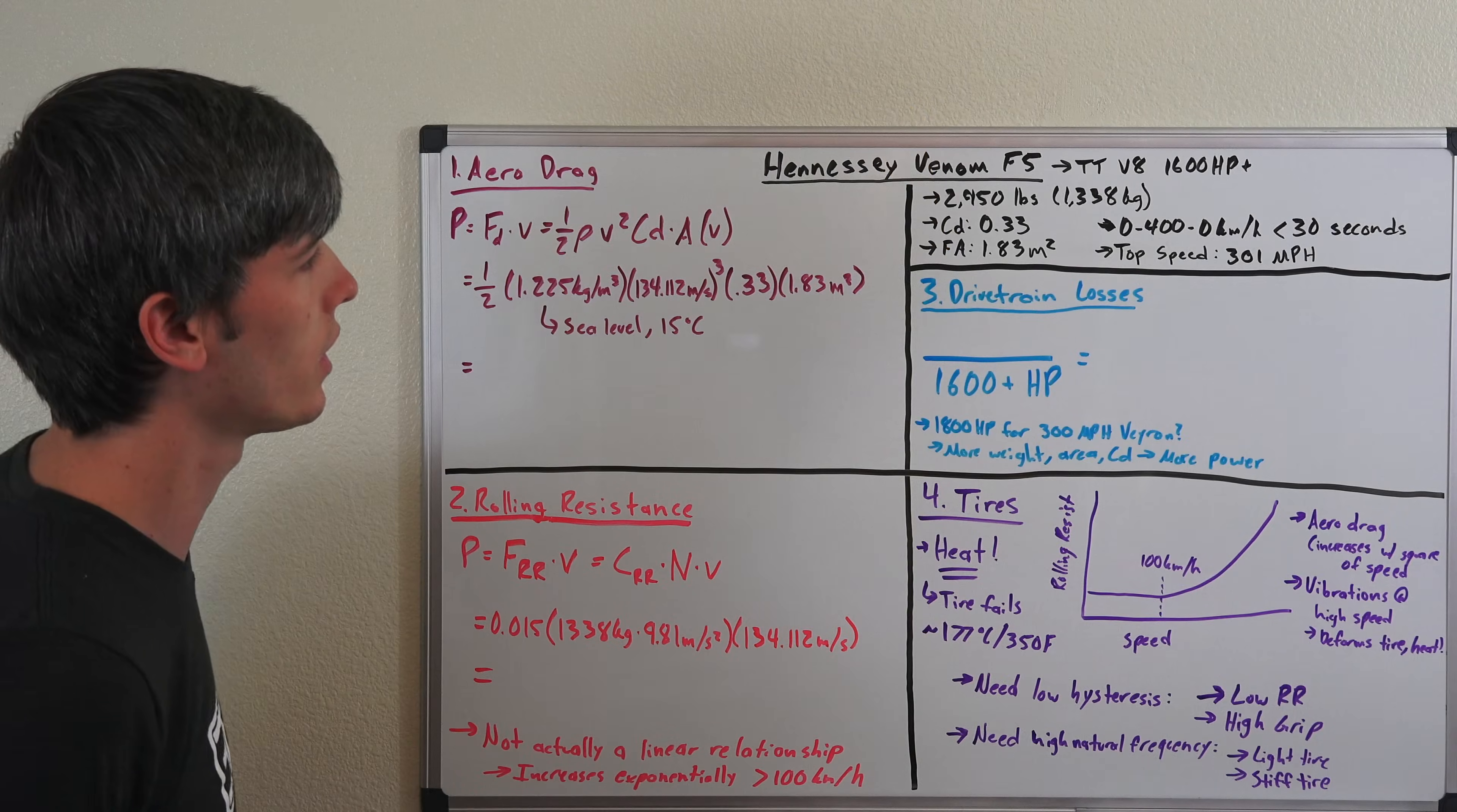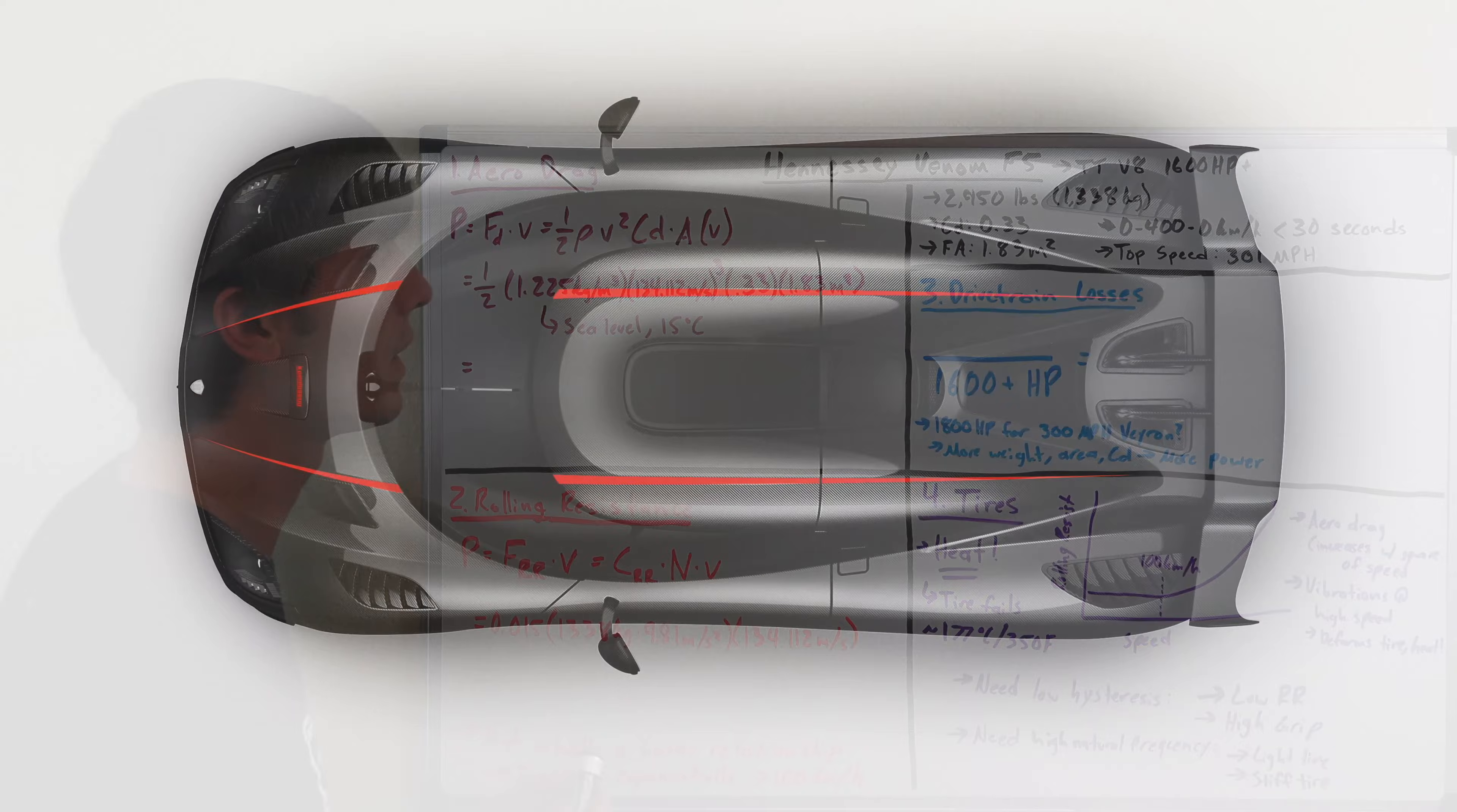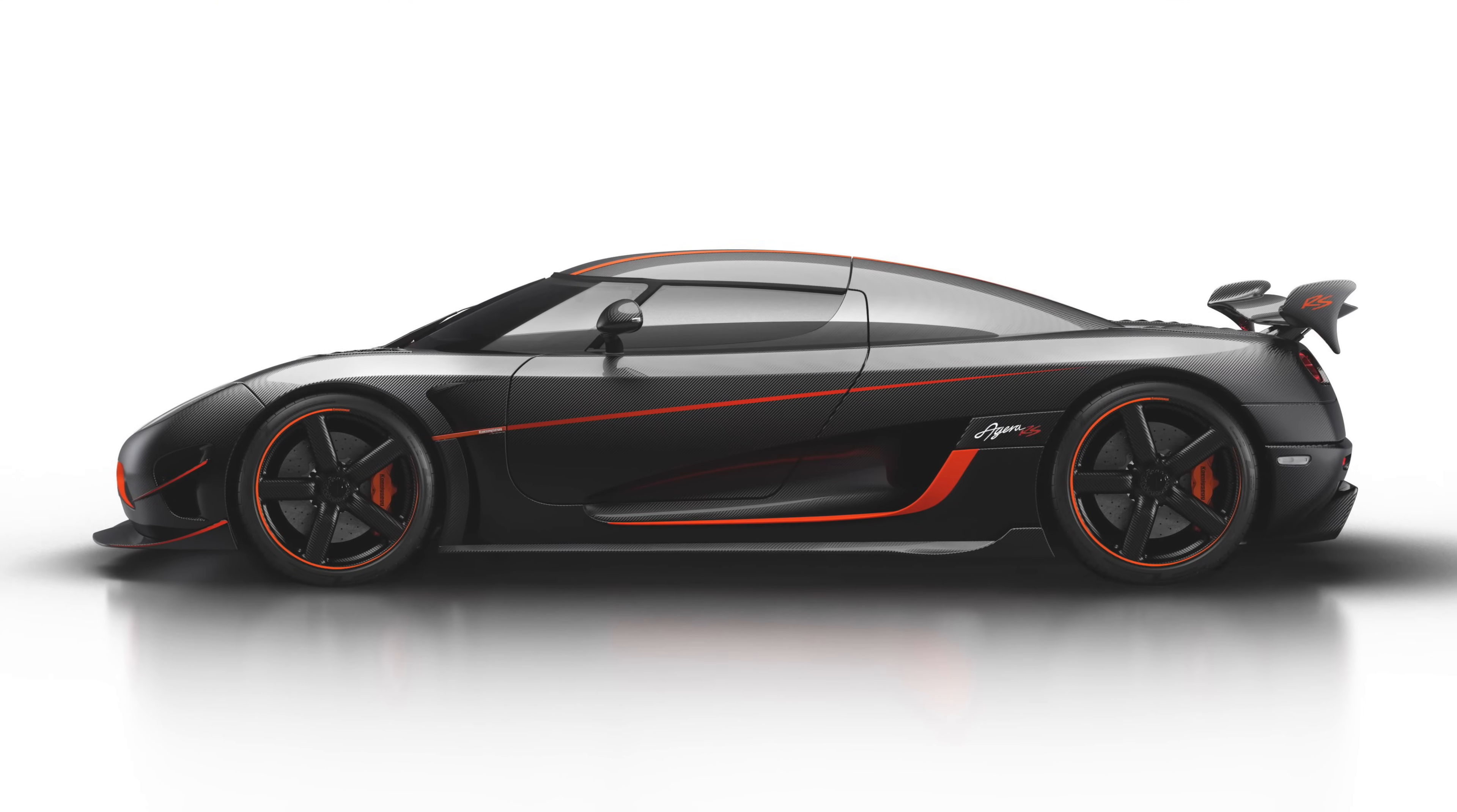It has a coefficient of drag of just 0.33 and a frontal area of 1.83 meters squared. The claims here are 0 to 400 to back down to 0 kilometers per hour in less than 30 seconds—faster than the Koenigsegg record which was just set—and a top speed of 301 miles per hour, also higher than the Koenigsegg record of 277 to 278 miles per hour.